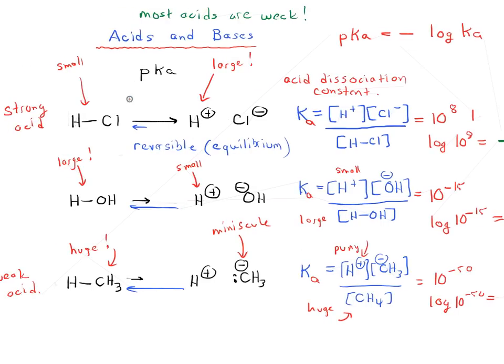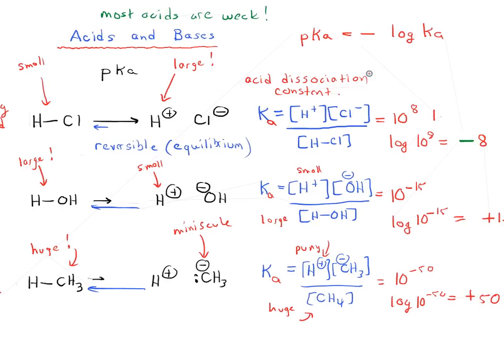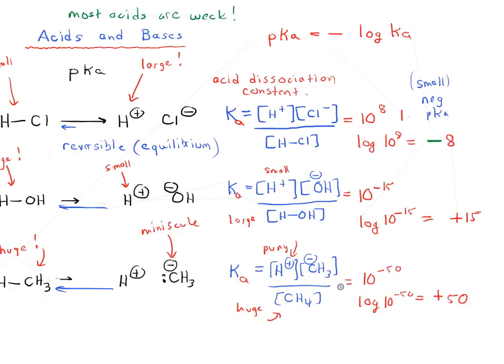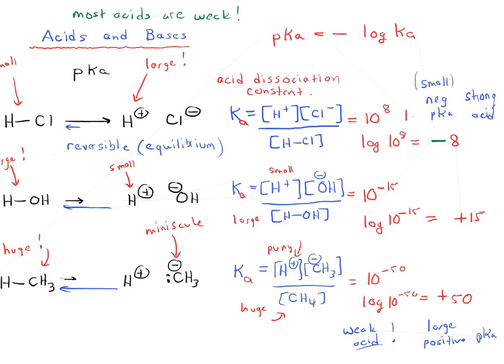And it's going to make this plus 15. It's going to make this plus 50. And so that is the pKa, the negative log of the Ka. You see that for very strong acids like HCl, we have a negative pKa. And for a very weak acid such as CH4, we have very large positive pKa. So actually the higher the pKa number, this is a very weak acid. Very weak acid has a very high pKa number. And a very low pKa number is a very strong acid.